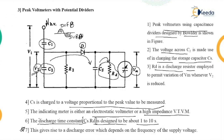Hopefully, you understood all three methods discussed in this lecture. The first method is series capacitor peak voltmeter. The second is the digital peak reading voltmeter. And the third is the peak voltmeter with potential divider. Thank you so much.